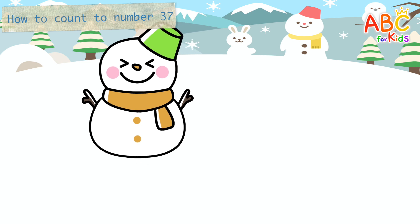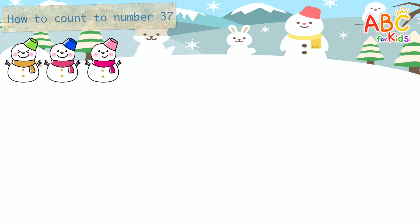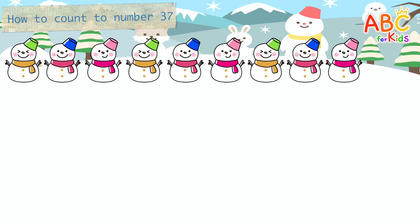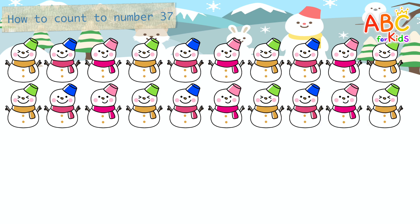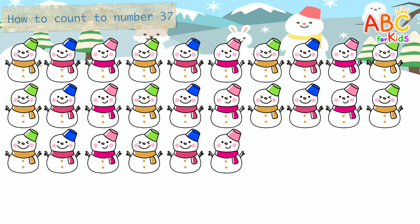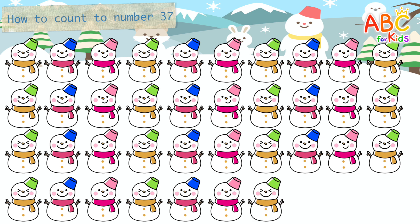Let's learn the number 37 by counting how many snowmen there are in total. 1, 2, 3, 4, 5, 6, 7, 8, 9, 10... 27, 28, 29, 30, 31, 32, 33, 34, 35, 36, 37. Very good!